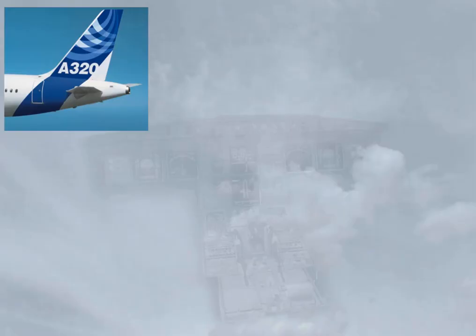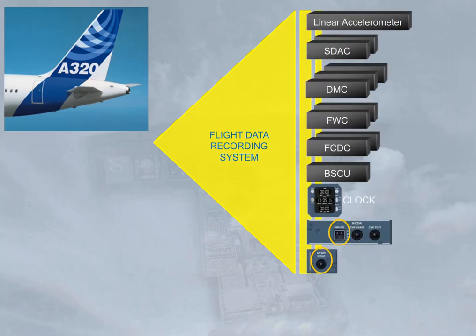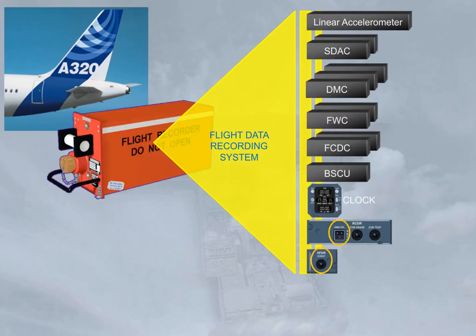The aircraft is equipped with the flight data recording system, which records the mandatory parameters from different computers. A digital flight data recorder (DFDR) allows storing the last 25 hours in a fireproof and shockproof box with an attached underwater locator beacon. The DFDR is fitted in the tail section of the aircraft.